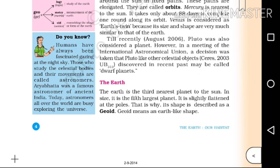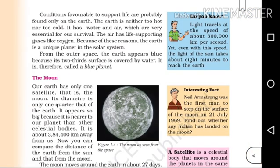The Earth has water and air, which are very essential for survival. It has life-supporting gases like oxygen. Because of these reasons, the Earth is a unique planet in the solar system.